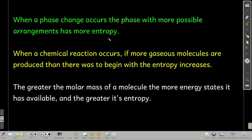There's more entropy in the liquid phase than in the solid phase. And when you go from a liquid to a gas, there's a lot more entropy because the gas particles have a lot more space to move around and far more possible arrangements. So from liquid to gas, the entropy increases — delta S is positive. Going the opposite direction: gas to liquid, you're decreasing entropy; liquid to solid, you're decreasing entropy.